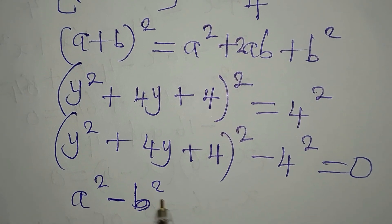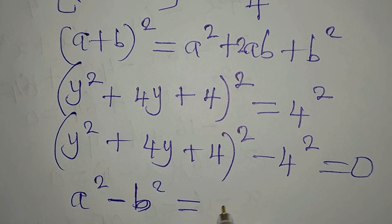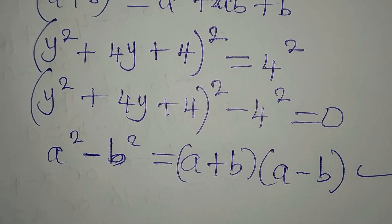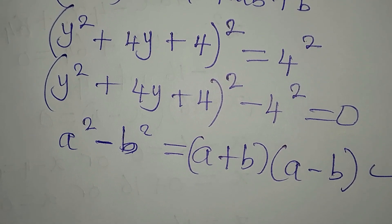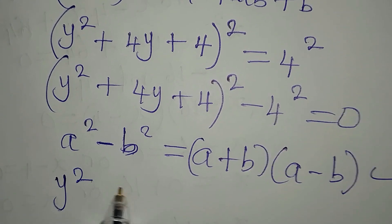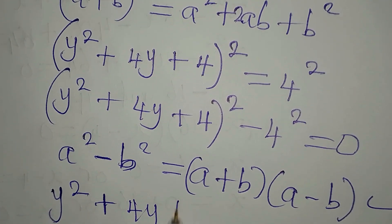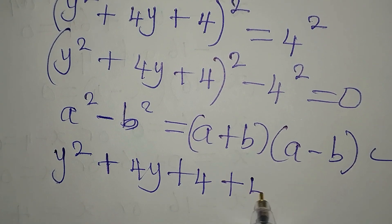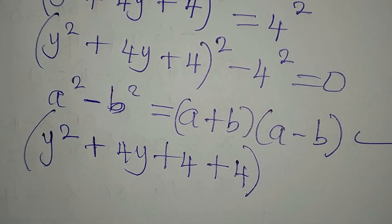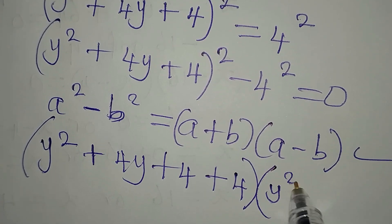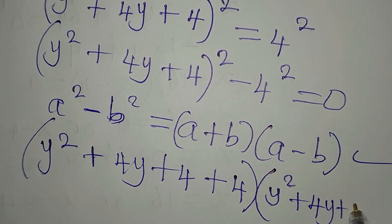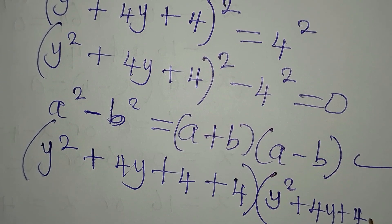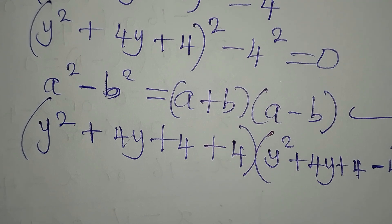We can express this in factored form. Our 'a' is (y squared plus 4y plus 4), and our 'b' is 4. So the first bracket is (y squared plus 4y plus 4 plus 4), and the second bracket is (y squared plus 4y plus 4 minus 4), and everything equals 0.